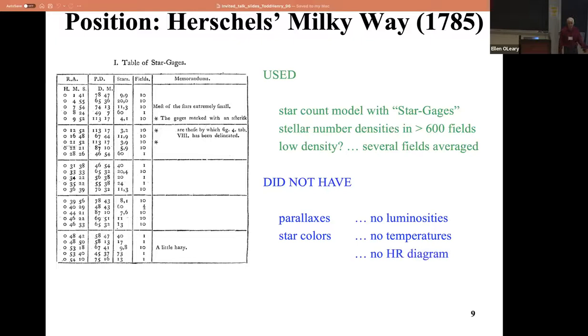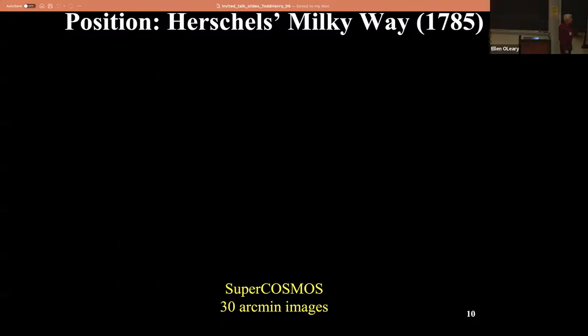And they didn't have an HR diagram. We love the HR diagram - you can't do much of anything in stellar astronomy without one. It's the fundamental map. If you don't have one, how do you do this? Well, you just look at pictures on the sky.